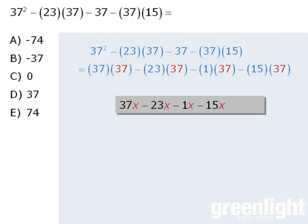In both expressions we have 37 times some value, minus 23 times the same value, minus 1 times the same value, minus 15 times the same value.